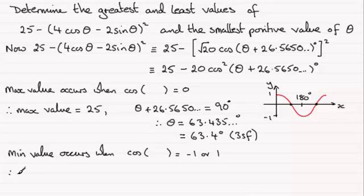So that minimum value, therefore the minimum value will be equal to 25 minus 20 times 1, in other words 20, and that's just going to give us 5. But as for that smallest positive value of θ for which this occurs, this is where we've got to be careful.